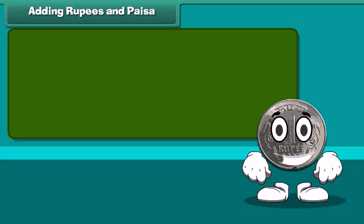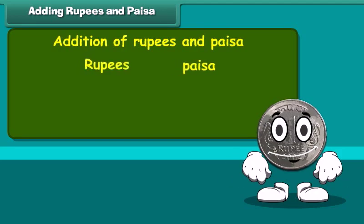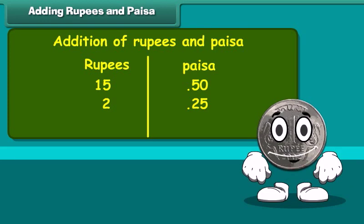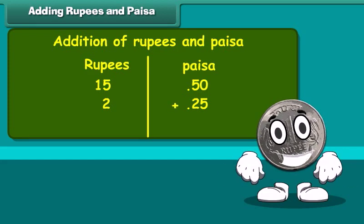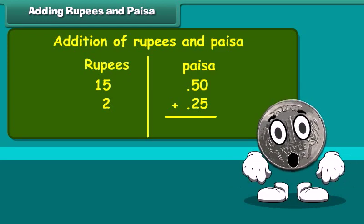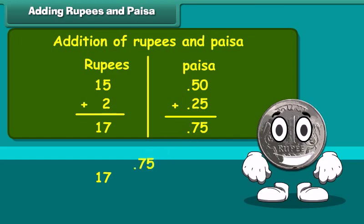Let us learn addition of rupees and paisa. Add 15 rupees 50 paisa and 2 rupees 25 paisa. Write the amount in two separate columns of rupees and paisa. First, add numbers in the paisa column: 50 plus 25 paisa is equal to 75 paisa. Now add numbers in rupees column: 15 plus 2 is 17. Therefore, the sum is 17 rupees and 75 paisa.